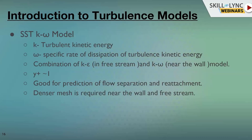The SST k-omega model is very good for prediction of flow separation and reattachment, and a denser mesh is required near the wall and in the free stream. This model is well suited for problems like centrifugal pumps or external aerodynamics. With some modifications, this model can be used in those scenarios as well. These are the three most commonly used turbulence models.